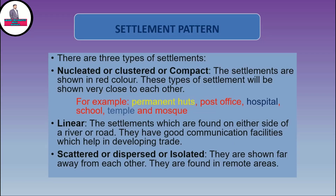When we talk about settlement patterns, there are three types of settlements. The first one is nucleated, also known as clustered or compact. The settlements are shown in red color and these types of settlements will be shown very close to each other. For example, permanent huts, post office, hospital, school, temple and mosque. All these manmade things shown in red color are close to each other, so they will be called nucleated.